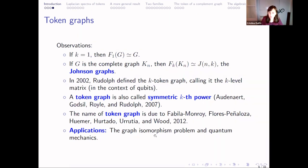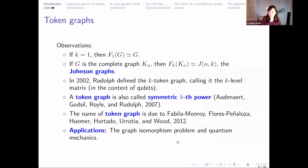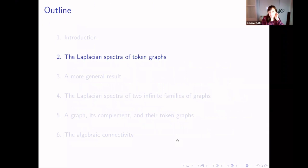Token graphs have applications. One of them is the graph isomorphism problem, and they are also used in quantum mechanics. I don't know much about these applications in quantum mechanics, but I would like to study this problem because I think it's very interesting — I like both quantum mechanics and graph theory, so I think it's my subject for the near future. Let's go to the Laplacian spectra of token graphs.